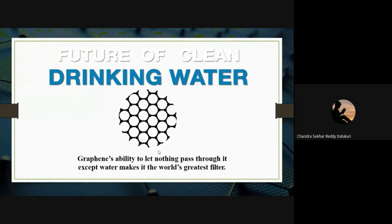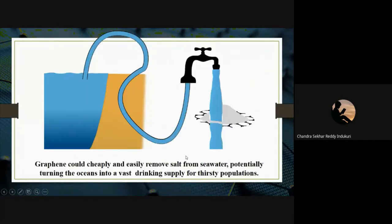Graphene has also proven to be an anti-corrosion coating for metals, making them transparent, thinner, and longer-lasting than anything currently existing. Another important future technology is clean drinking water — graphene's ability to let nothing pass through it except water makes it the world's greatest filter. A single layer of graphene with very tiny holes can retain salt particles on its membrane, allowing only water molecules to pass through, potentially providing drinking water from seawater.